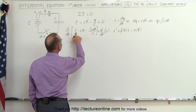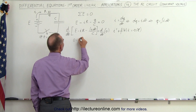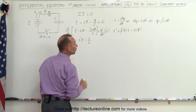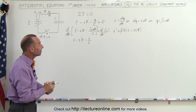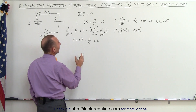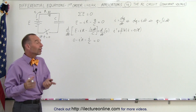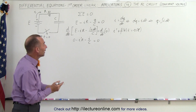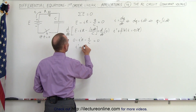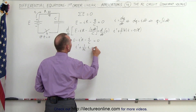Since E is not changing with respect to time, its derivative is zero. We get minus I prime times R minus I over C equals zero, because when we take the derivative of an integral we simply get what's inside the integral. Simplifying by dividing both sides by R and multiplying by negative one, we get I prime plus 1 over RC times I equals zero.